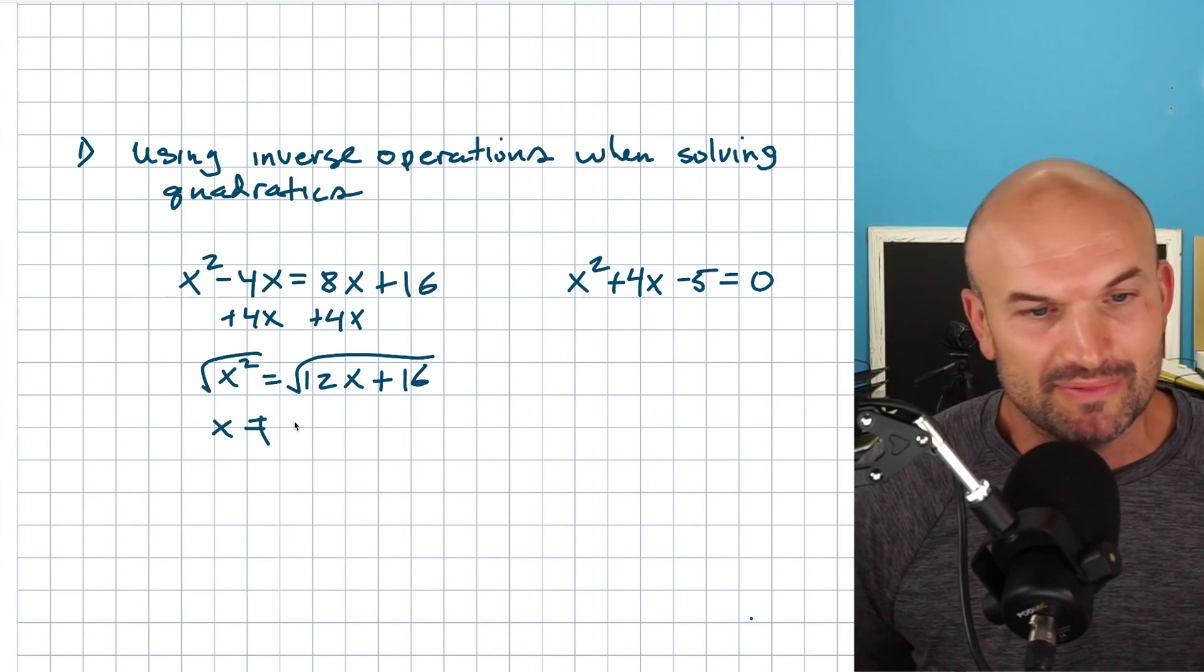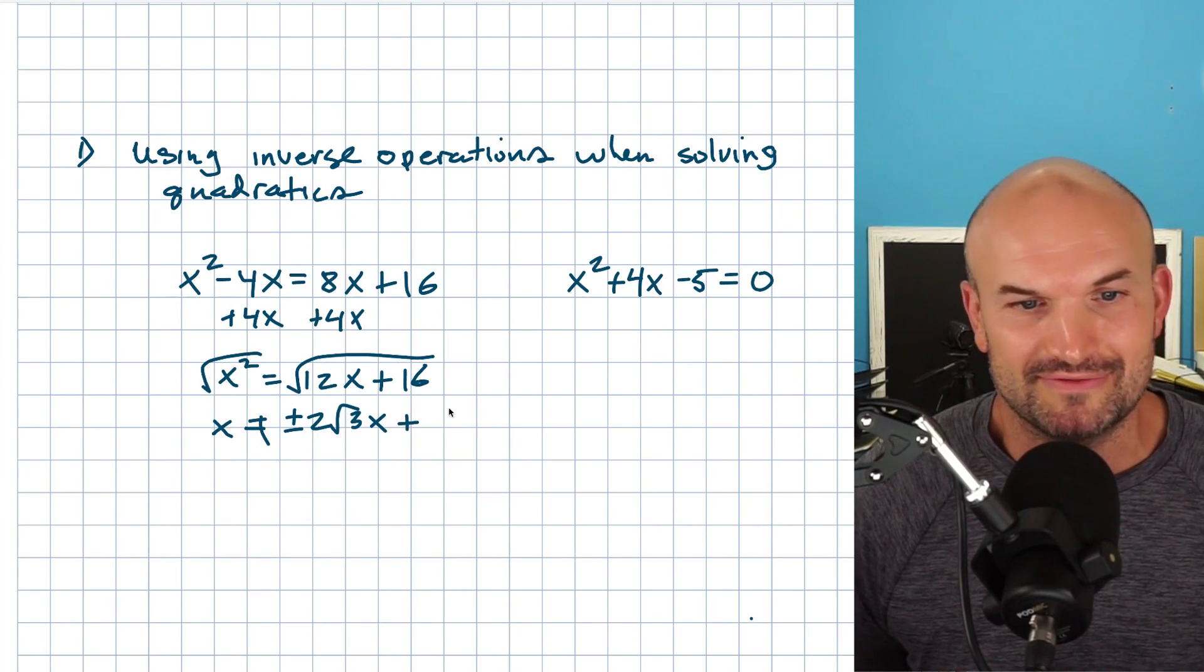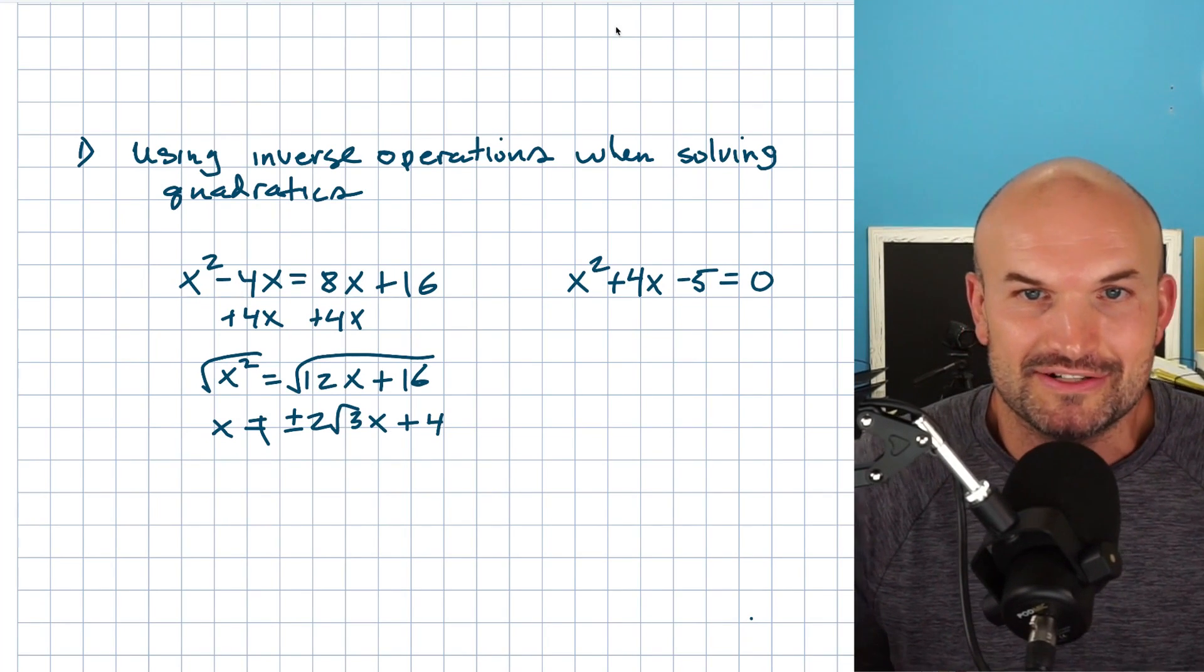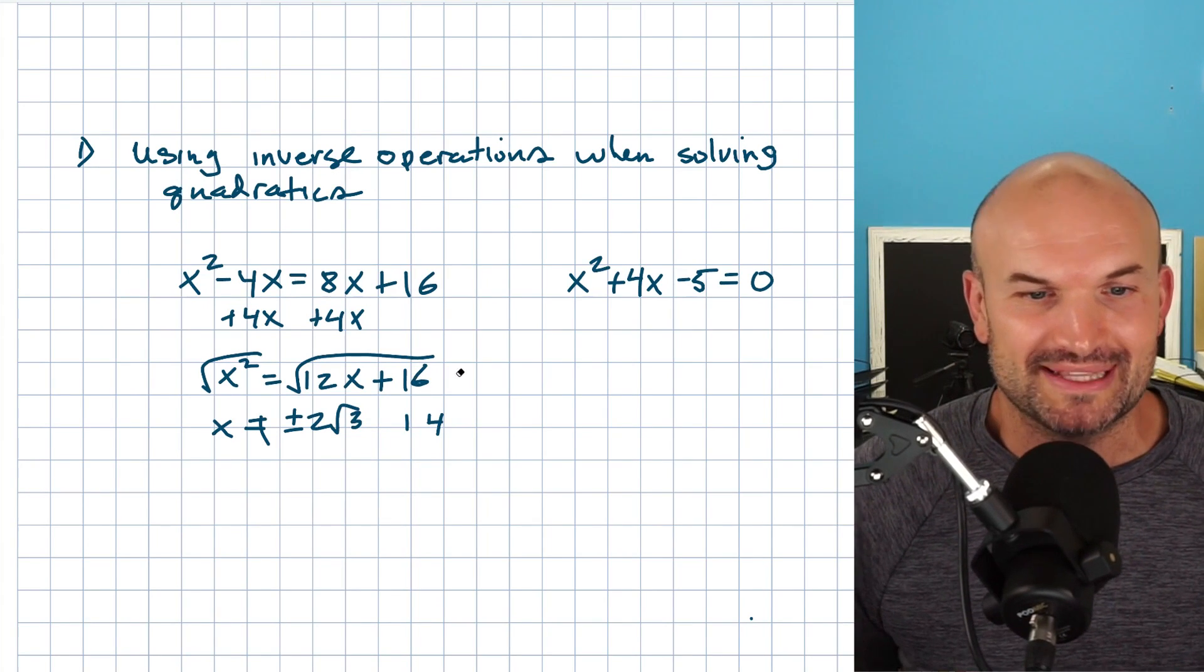sometimes students will simplify this to be like a plus or minus a two square root of three X, plus four, some kind of weird answers like that. Obviously you can't have X in the answer. So maybe this would be like, man, maybe it doesn't exist. And they'll just kind of forget about it or something like that.